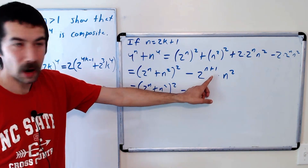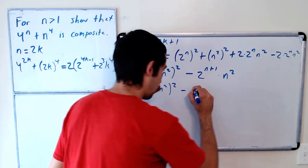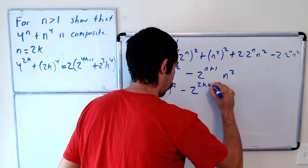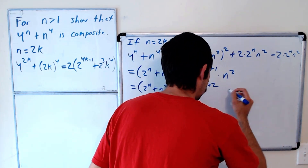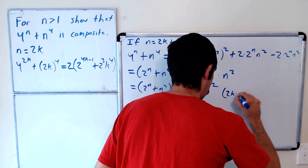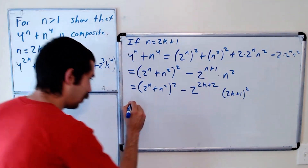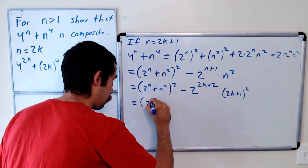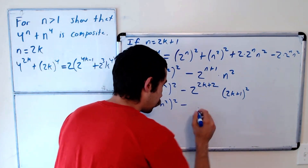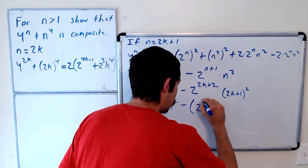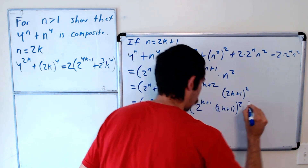Now, 2 to the n plus 1 is 2 to the 2k plus 1 plus 1, which is 2 to the 2k plus 2. And this is a perfect square — it equals 2 to the 2k plus 1 times 2k plus 1, all squared.